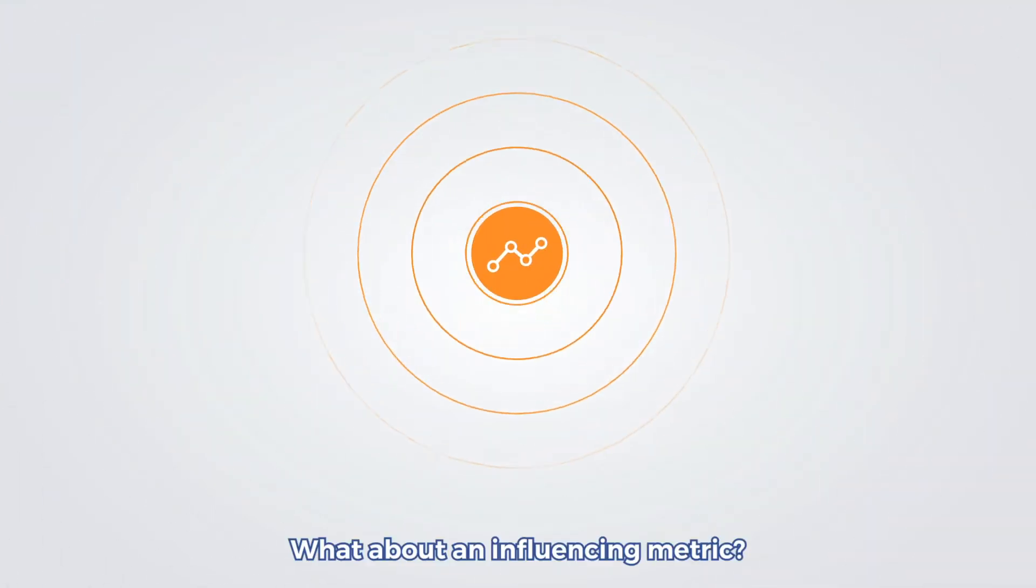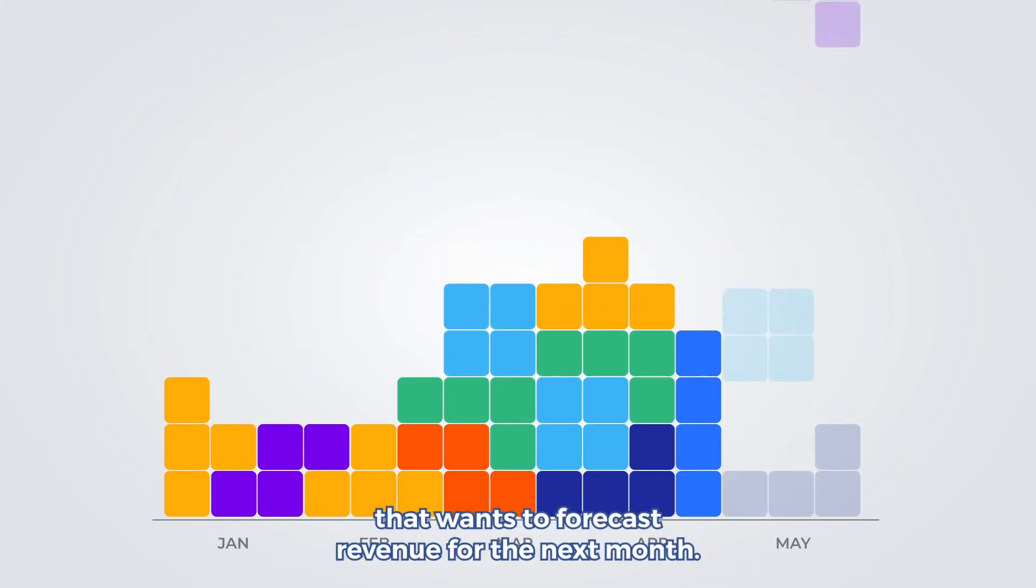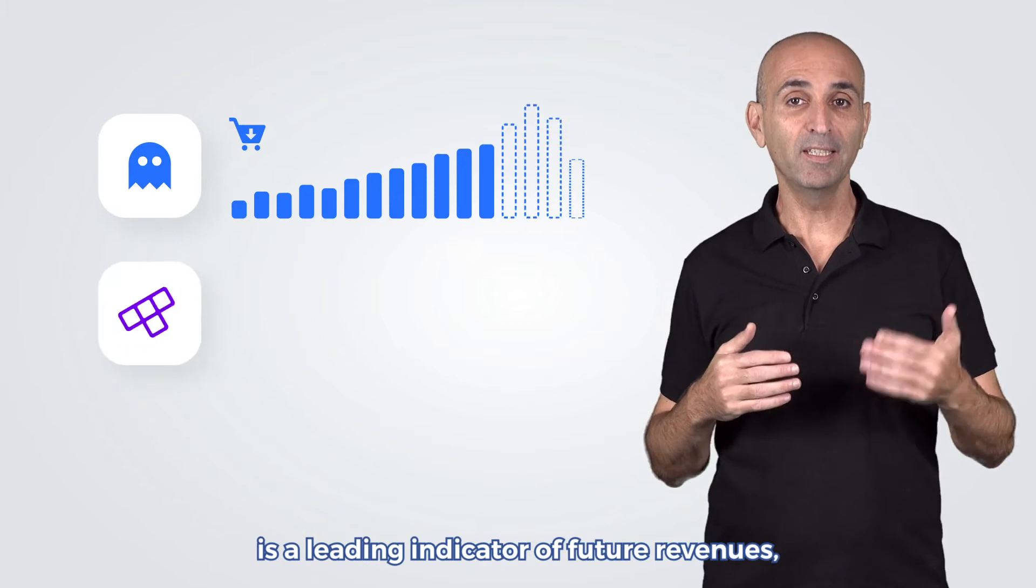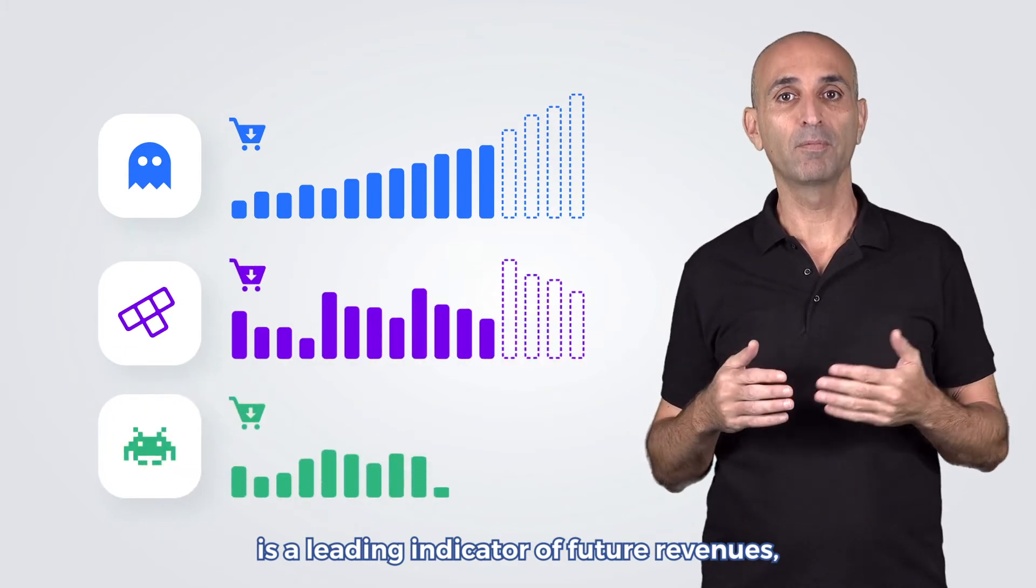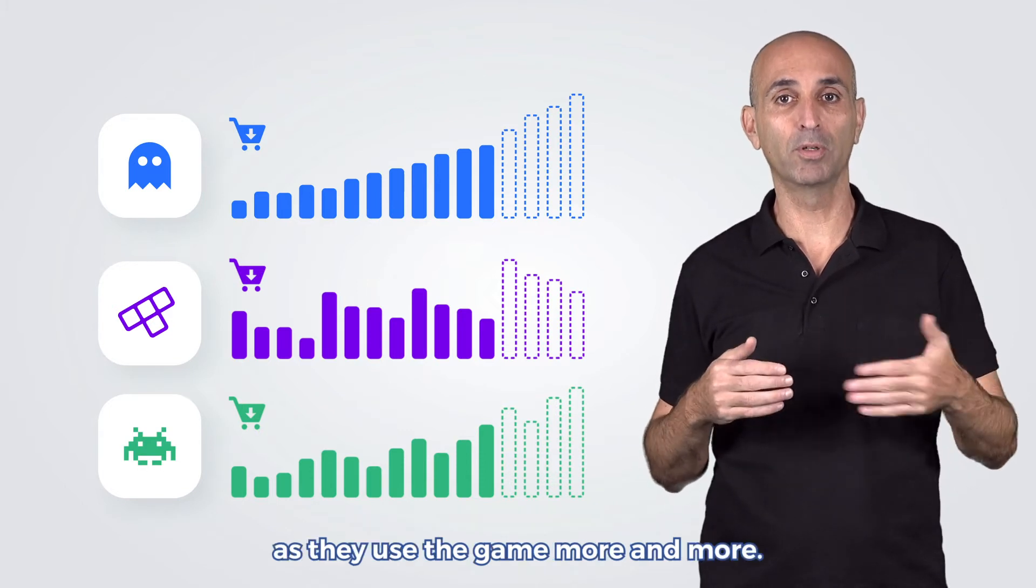What about an influencing metric? Suppose you're a gaming company that wants to forecast revenue for the next month. Number of recent app downloads is a leading indicator of future revenues since new users will start generating revenue gradually as they use the game more and more.